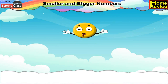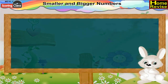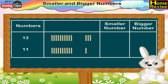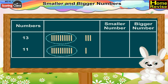Smaller and Bigger Numbers. Now, children, among these numbers, let us find which number is bigger and which number is smaller. We have 13 and 11. In order to find the bigger and smaller number, we'll draw 13 lines for number 13 and 11 lines for number 11. Now, let us make a circle of 10, which means count 10 lines and encircle it in both numbers 13 and 11.